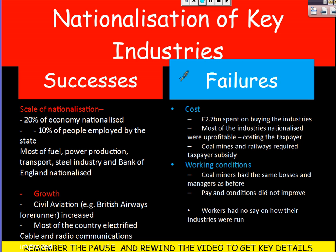But there were also big failures in nationalisation. The cost was £2.7 billion spent on buying the industries during an economic crisis. Most of the industries were unprofitable, costing the taxpayer money, and coal mines and railways required ongoing taxpayer subsidy. Also, for the workers involved, conditions did not improve — coal miners had the same bosses and managers as before, pay conditions did not improve, and workers had no say in how their industries were run.